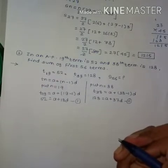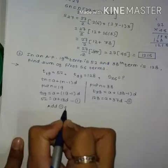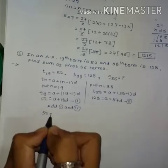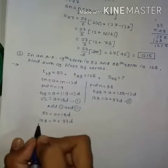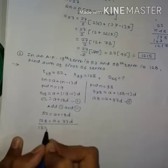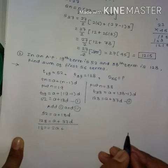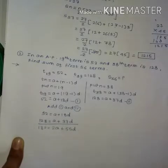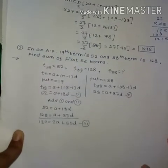Adding equation 1 and equation 2: (a + 18d) + (a + 37d) = 52 + 128. So 2a + 55d = 180. This is equation 3. Now to find S56 we use the Sn formula: Sn = n/2 × (2a + (n−1)d). Put n = 56: S56 = 56/2 × (2a + 55d) = 28 × (2a + 55d).